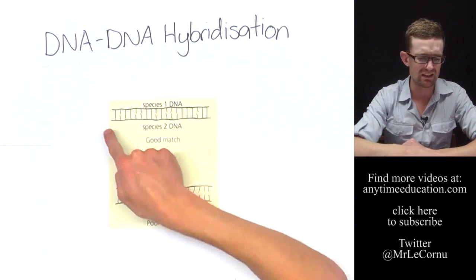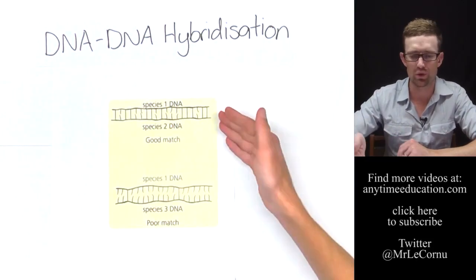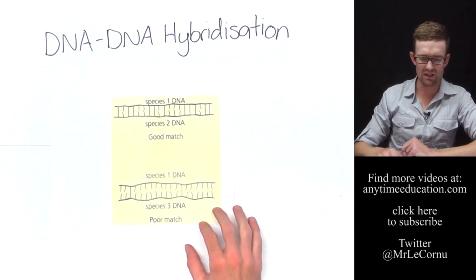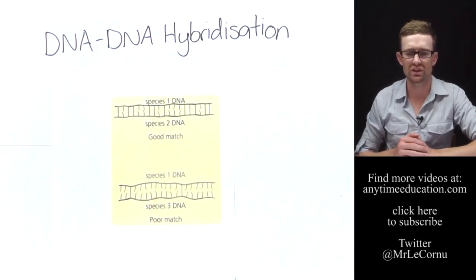So this would be the example you would see between, say, a human and a chimpanzee DNA sample. And this is more like what you would see between human and goldfish DNA.